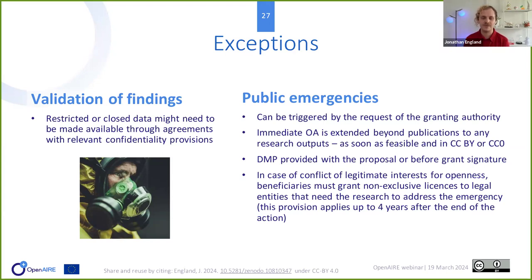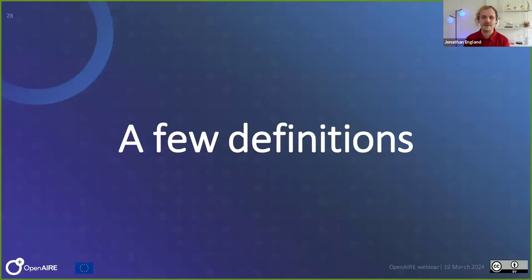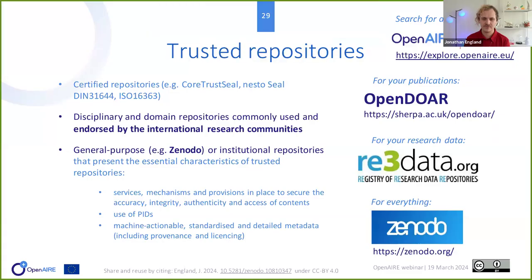Any conflict with intellectual property rights has to be discussed directly with the project officer. For trusted repositories for data, the same definition applies as for publications: use one well-endorsed in your community, or use a generic one like Zenodo. For research data, there is a specific website called re3data where you can search for different repositories, or you can use OpenAIRE Explore, which has all different repositories available.